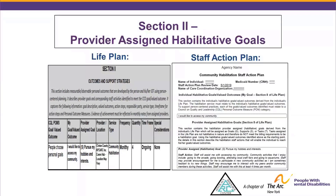The Staff Action is a description so staff know how to support the person to pursue their hobbies and interests and access the community. It reads: 'Staff will assist me with accessing my community. Community activities that I enjoy include going to the arcade, going bowling, attending local craft fairs, and going to aquariums. Staff may provide encouragement for me to participate in new community activities as sometimes I'm hesitant to try new things. Staff may encourage me to interact with my peers and community members during these activities. Staff will assist me with this at least four times per month.' The frequency comes directly from the Life Plan.